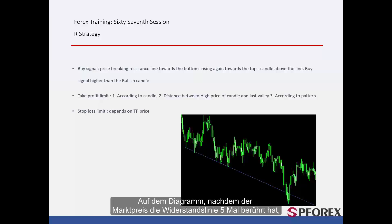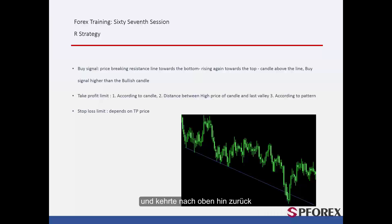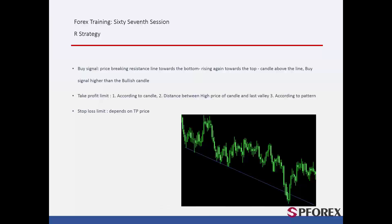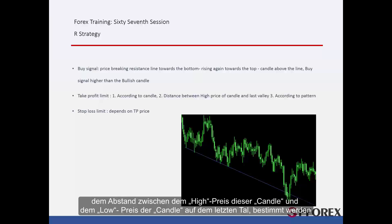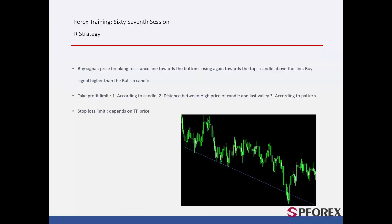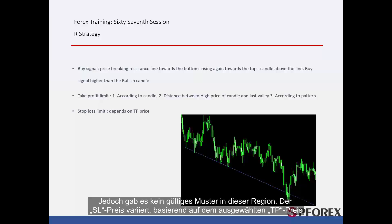On the graph, after the market price has hit the resistance line five times, it crossed the given line towards the bottom, then returned towards the top. As a candle formed above the given resistance line, a trader could place a buy order. TP prices could be determined by the bullish candle length and the distance between the high price of this candle and the low price of the candle on the last valley. However, there was no valid pattern in this region. SL price varied based on selected TP price.